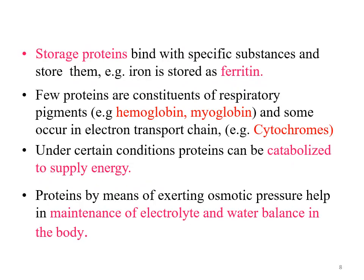Several proteins serve as storage proteins — they bind with specific substances and store them. For example, iron is stored as ferritin, so ferritin is a storage protein. Few proteins are constituents of respiratory pigments, for example hemoglobin and myoglobin. These respiratory pigments increase the oxygen-carrying capacity of the blood. Hemoglobin is present in red blood cells while myoglobin is predominantly present in the muscles. Some occur in the electron transport chain — for example cytochromes, present in the inner mitochondrial membrane and important in energy metabolism. Under certain conditions, proteins can also be catabolized to supply energy; one gram of protein can release 4 kcal of energy.